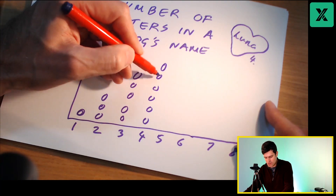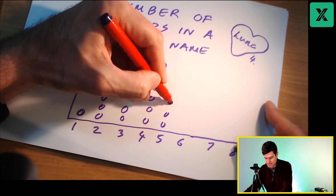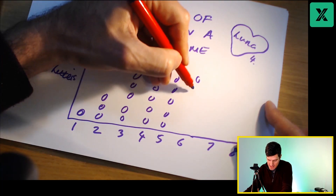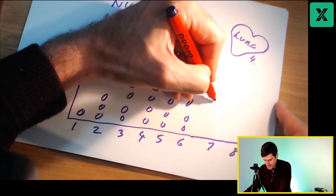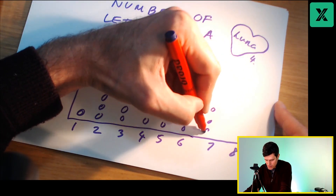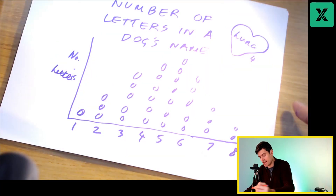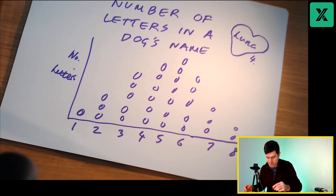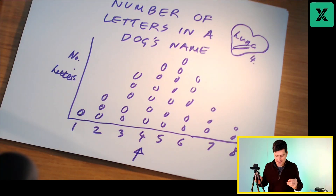Here I'm saying there's one, two, three, four, five, six dogs that have four-letter names. Let's say there's seven dogs that have five-letter names, five dogs that have six-letter names, and then it will gradually tail off towards the end — maybe there's a dog with a nine-letter name as well. So the distribution of the data might look something like this. Luna, who has four letters in her name, would of course fit into this category.